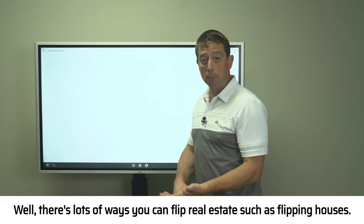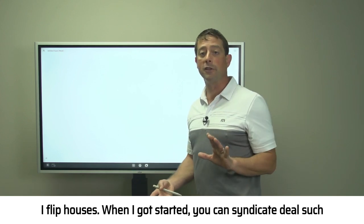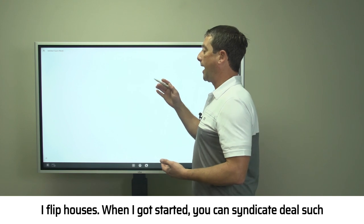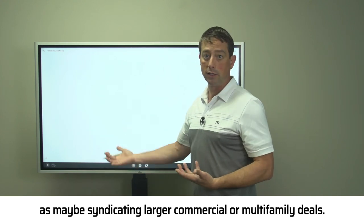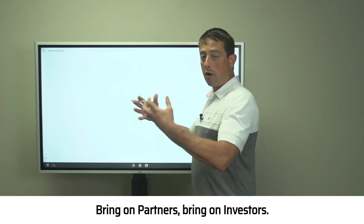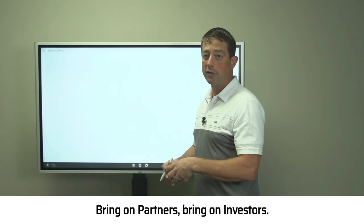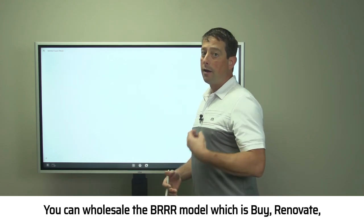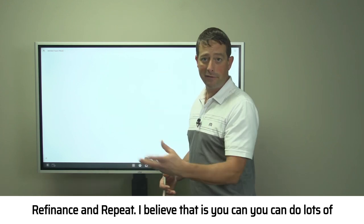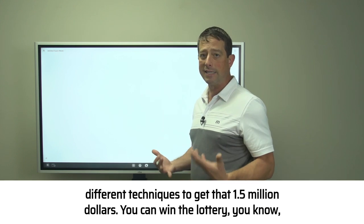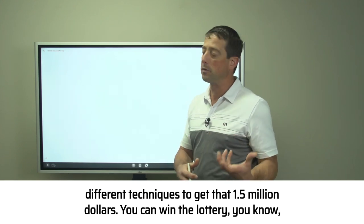Well, there's lots of ways. You can flip real estate such as flipping houses—I flipped houses when I got started. You can syndicate deals, such as syndicating larger commercial or multi-family deals, bringing on partners and investors. You can wholesale. The BRRRR model, which is buy, renovate, refinance, and repeat. You can do lots of different techniques to get that 1.5 million dollars.